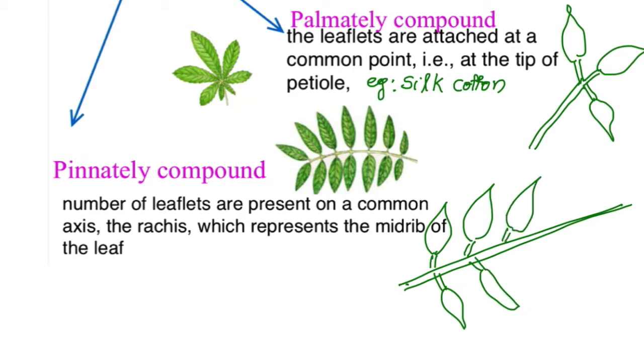So there are two types of compound leaves: palmately compound leaf and pinnately compound leaf. In palmately compound, leaflets are arranged at the tip of the petiole. In pinnately compound, leaflets are arranged on a common axis called rachis.